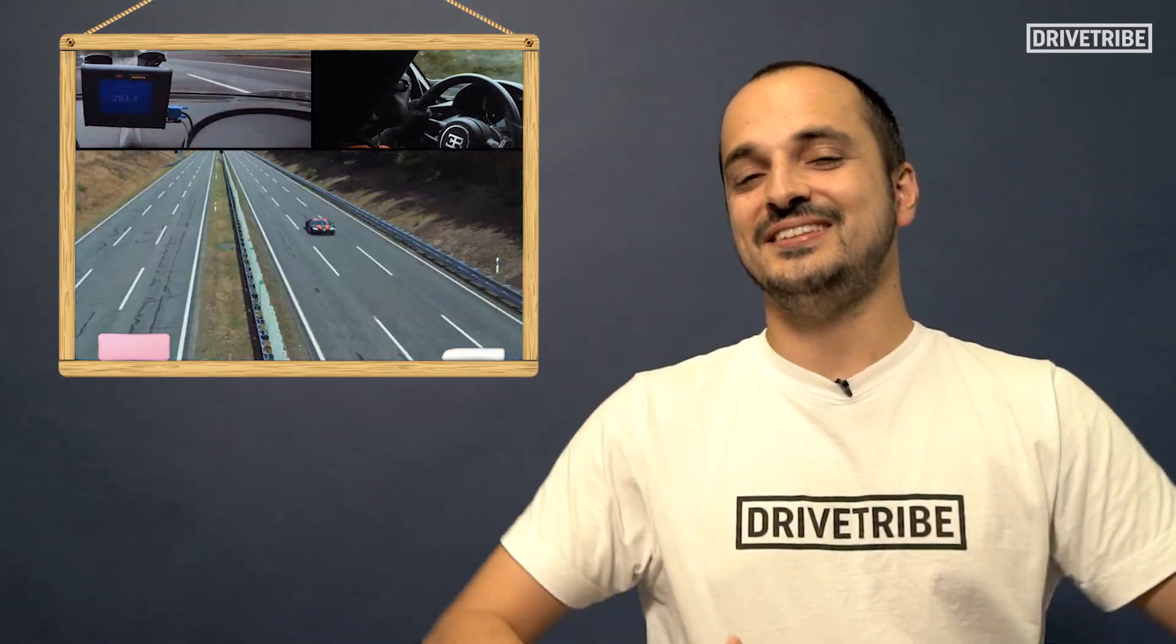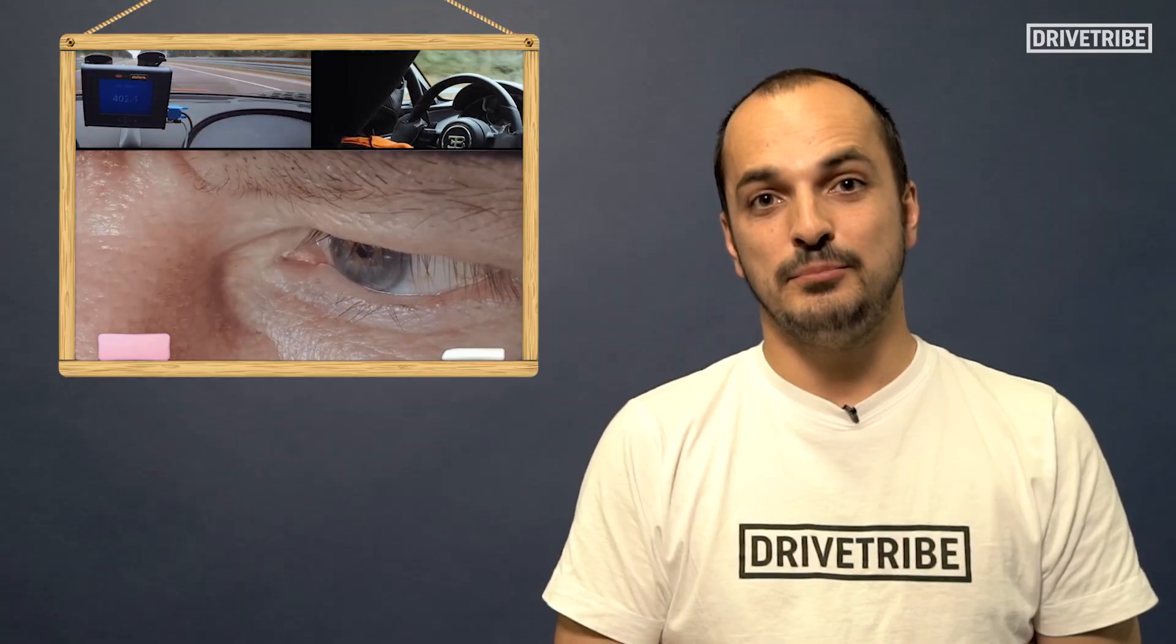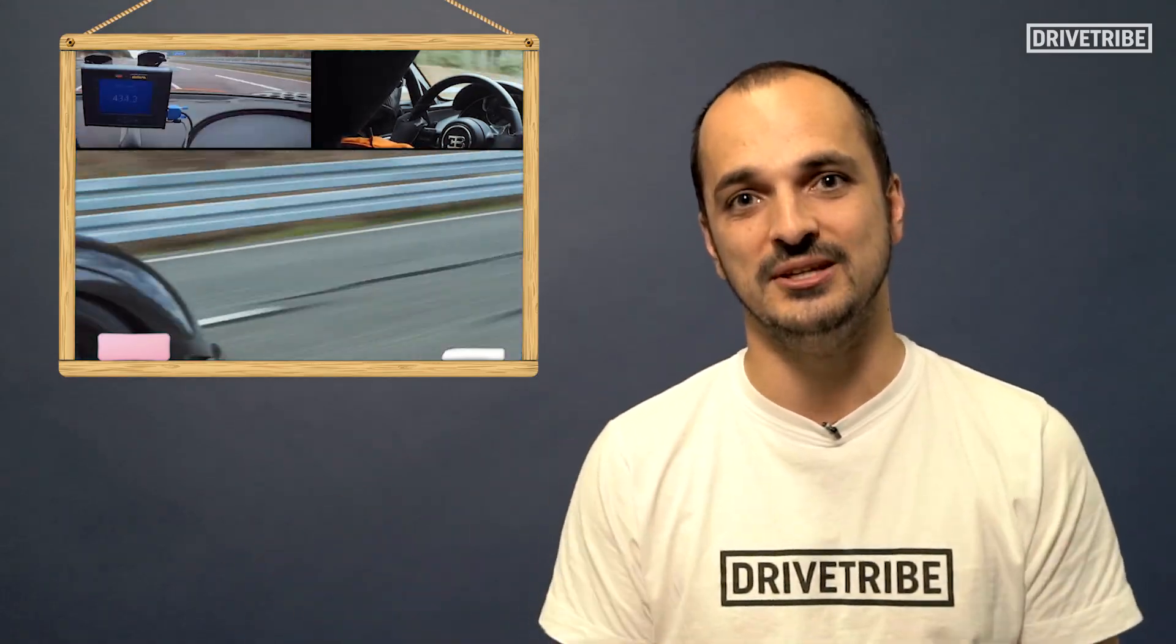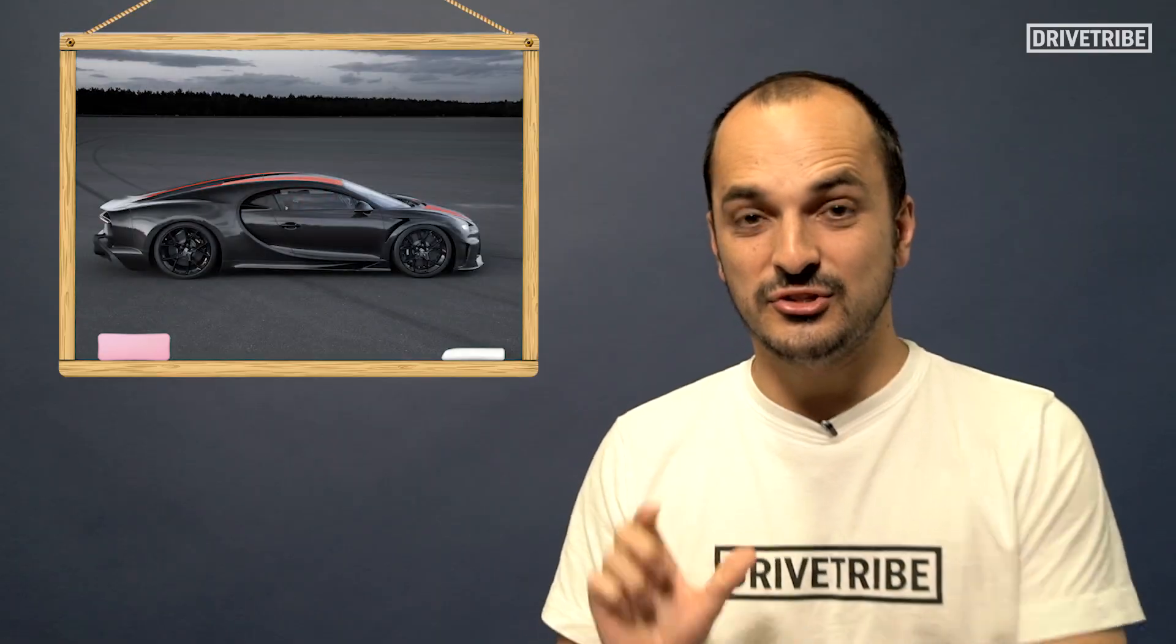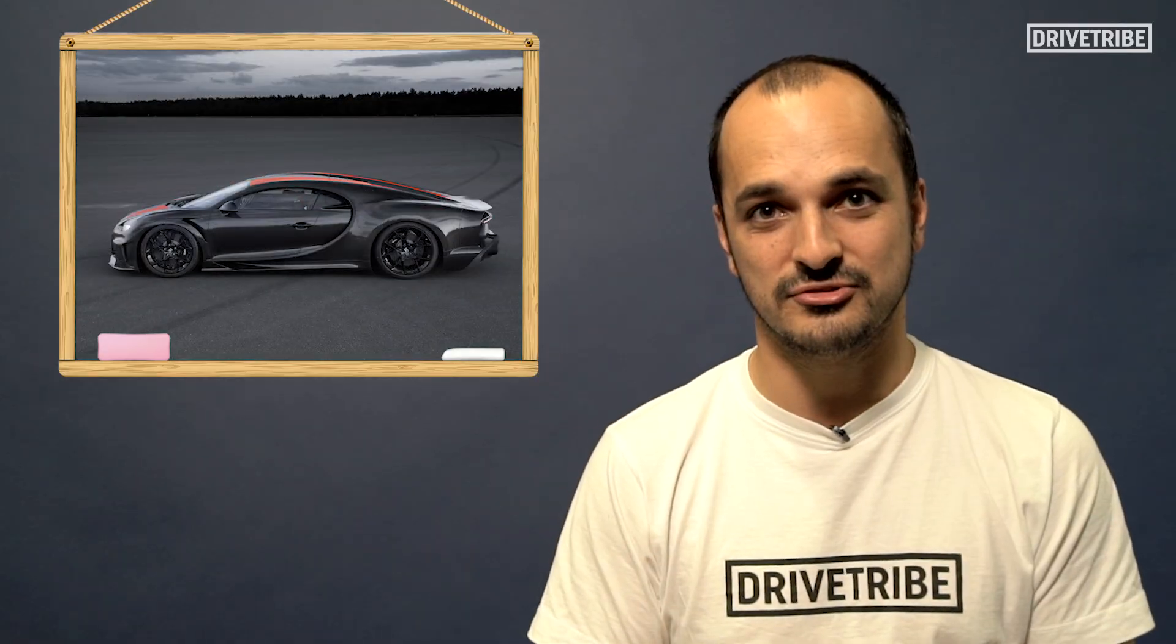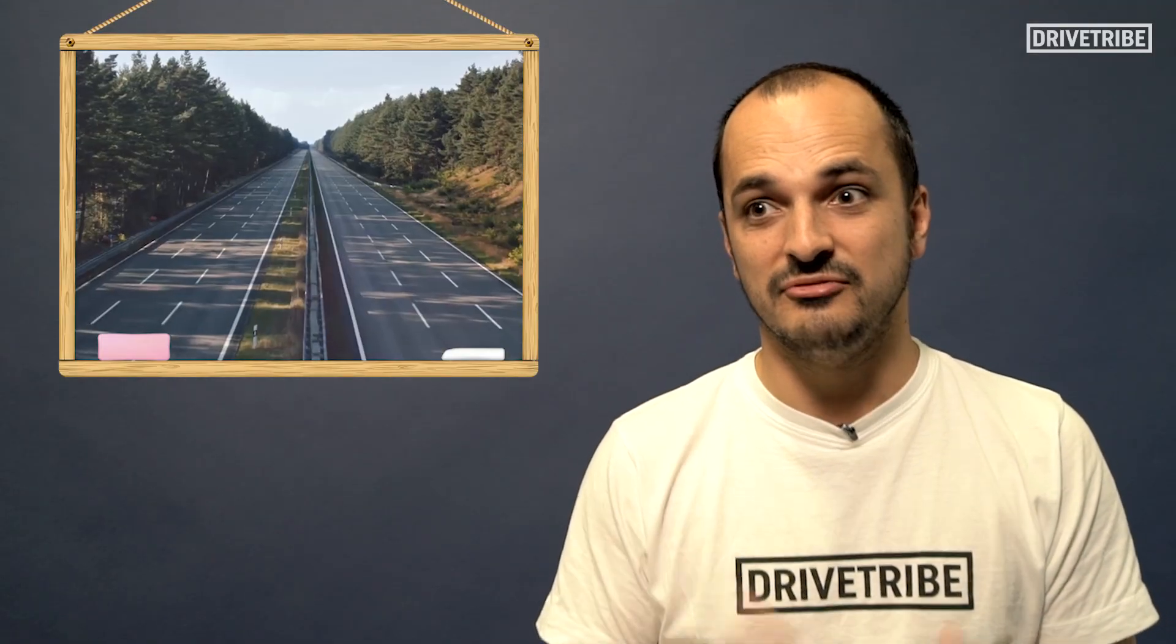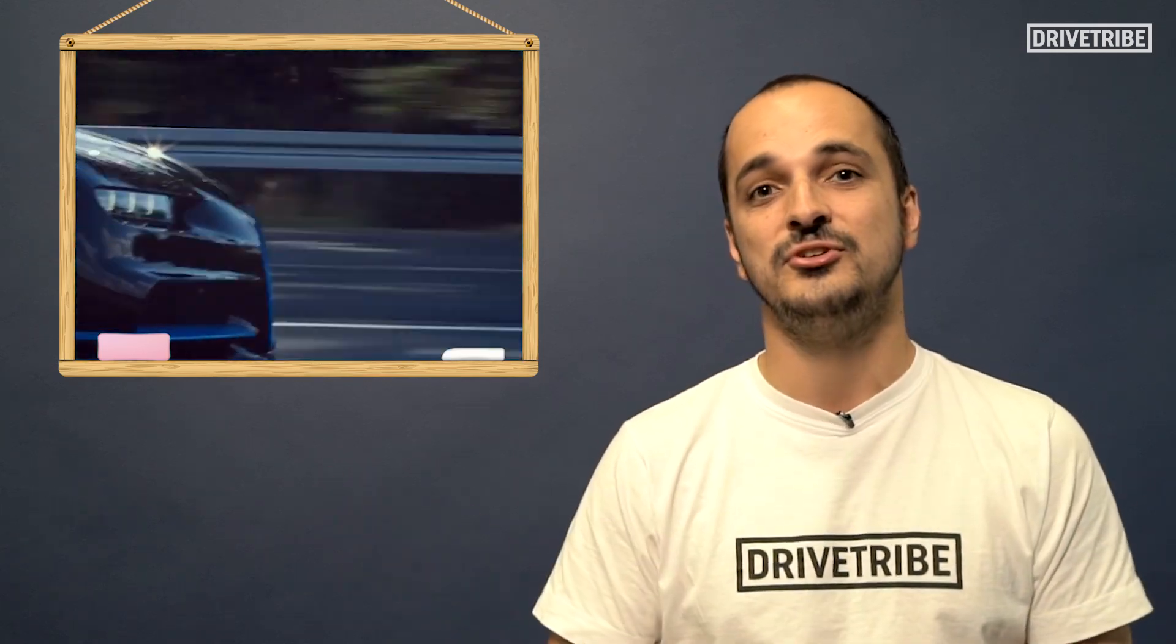Now sadly, Bugatti's record isn't an official production car record, because as you may know, to set a record you need to set a speed in one direction, turn around, set it in the other direction, and then take an average. Bugatti only went in one direction to set their 304.77 miles an hour, which means they can't claim that top speed record. Now there's a reason for that. The Ehra-Lessien Test Track has been around for decades, and all the cars have been driving around it clockwise. That means the concrete has grained itself in that clockwise direction. If you turn the Bugatti around and drive it the other way around the track, you're essentially driving against the grain of the tarmac, which apparently really wears down the tires. Now the VW health and safety people thought that was too unsafe. They didn't know what would happen to the tires at that speed, so they refused to drive it in the other direction.